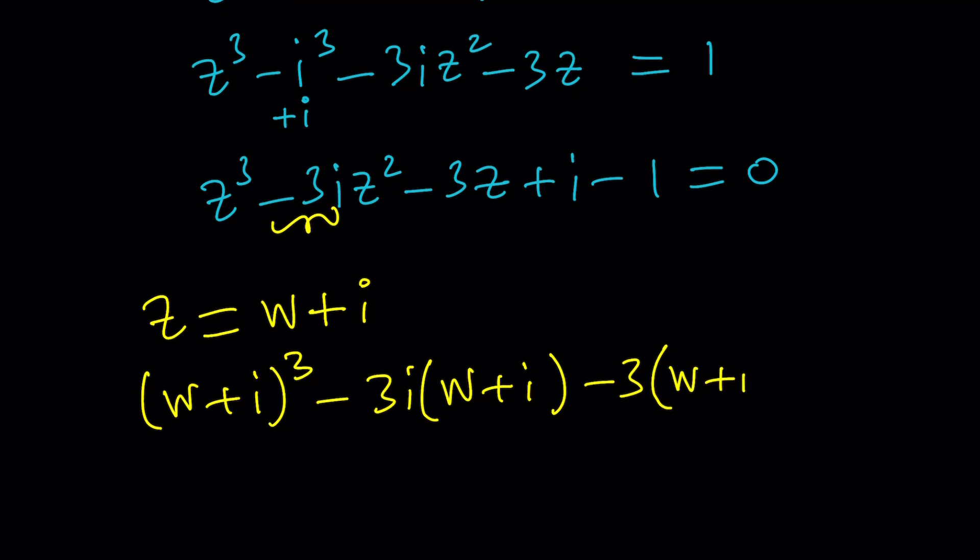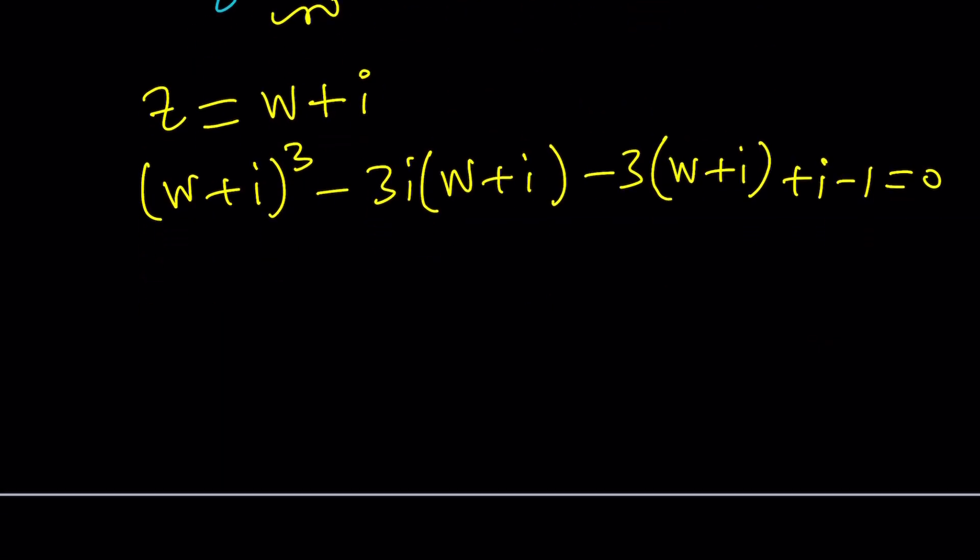Okay. So I'm going to replace Z with W plus I everywhere. And that should still equal zero. Now let's go on and expand this again, expanding it with the same type of formula. It gives us this minus 3W. I should probably write it as 3IW. Coefficients first. And then minus 3I squared. That's going to give me a positive 3. And then minus 3W minus 3I plus I minus 1. I don't need zero at this point, right?